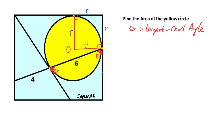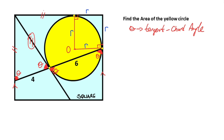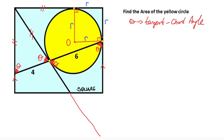We know that these two sides are parallel because of the square. That means if this angle is theta, this angle must also be equal to theta. And then notice that this angle is also theta, which means we get an isoceles triangle. Therefore these two sides must be equal, and this side must equal the other — because of the two tangent theorem. If we extend here like this, let's call here point K.